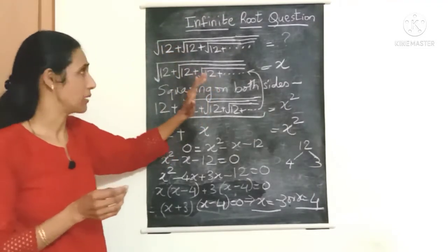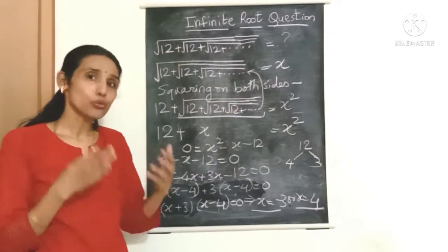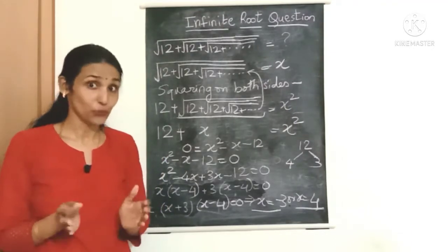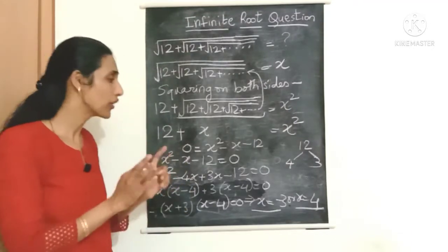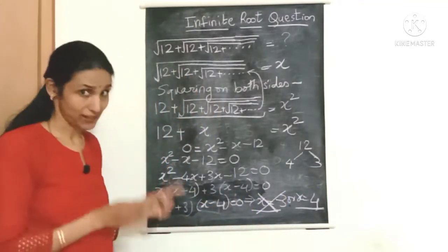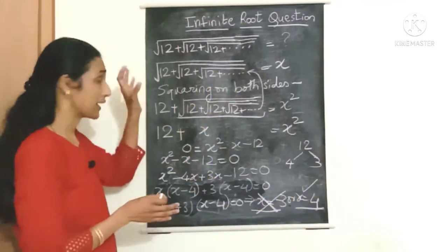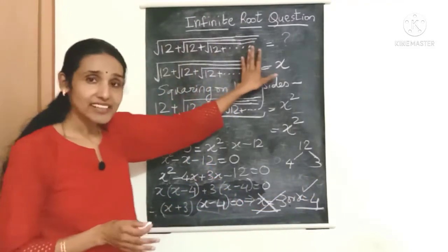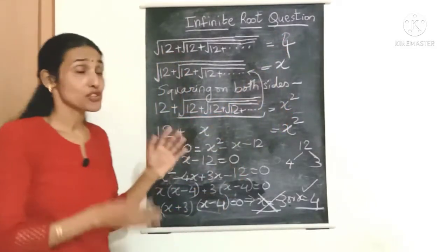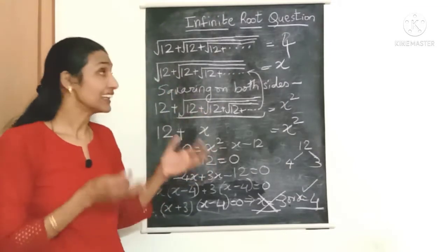As you can see here, you have a square root of a positive number plus square root of another positive number, and this goes on till infinity. So you're just having roots of positive numbers which are added. So will it ever be negative? No, it will not be negative. So we are going to straight away reject this value of x as minus 3. We are going to accept x as 4. So that means this entire expression is nothing but 4.